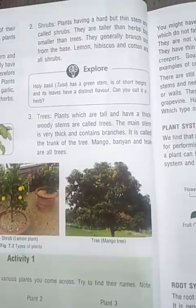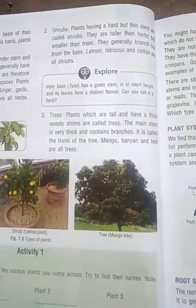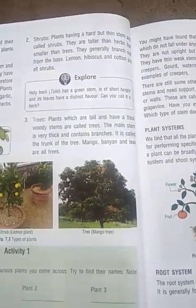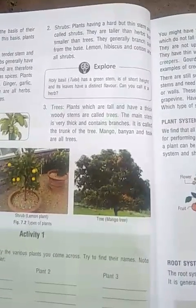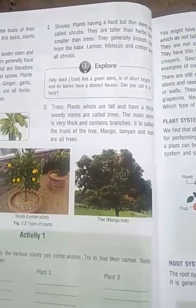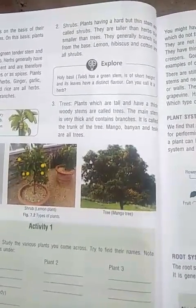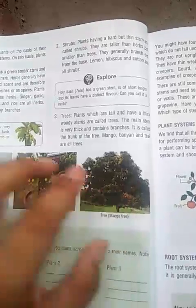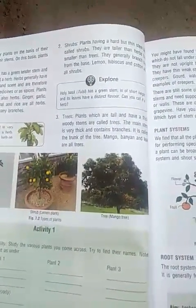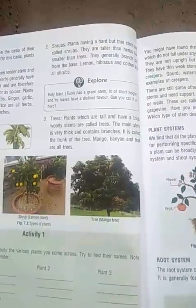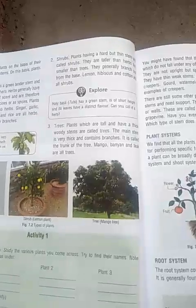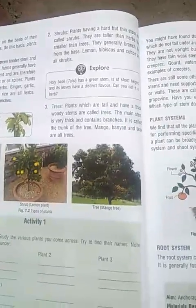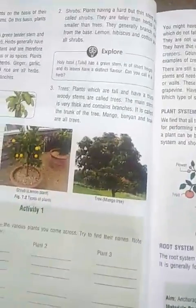Next are trees. Plants which are taller and having thick woody stems are called trees. They are taller and have a harder structure of the stems. The main stem is very thick and contains branches. Examples include mango tree, peepal tree, and neem tree. These plants have strong branches and thick stems.